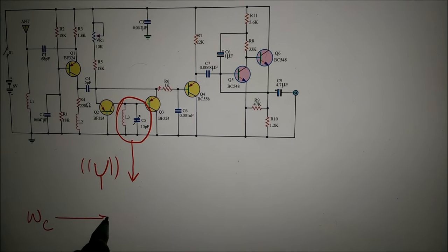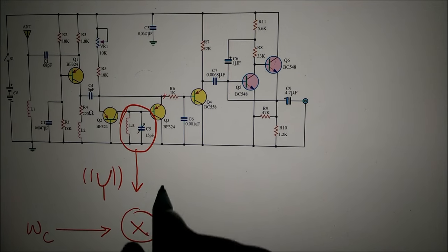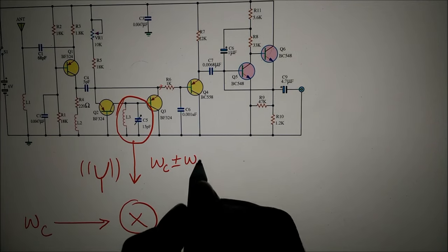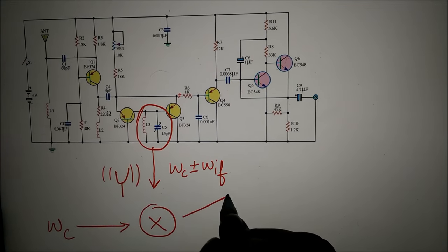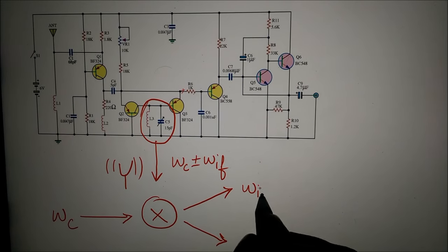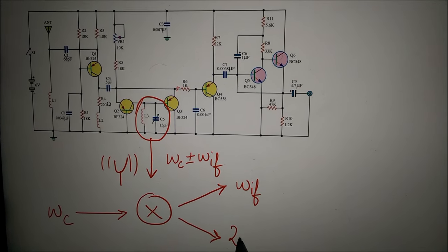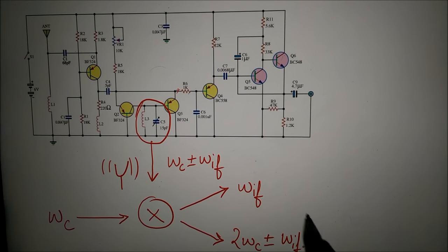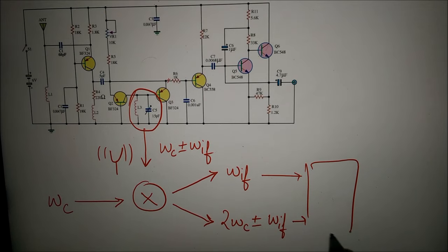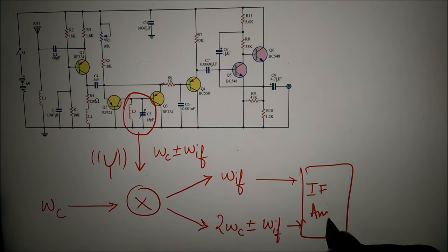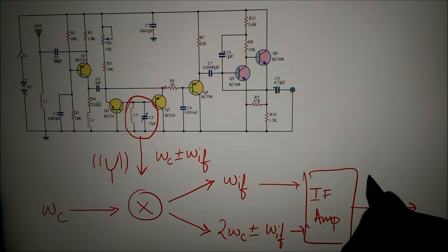Let the frequency of the input signal to the multiplier be Omega C. Then the input from the oscillator to the mixer will have a frequency of Omega C plus or minus Omega IF. The multiplier multiplies the two signals so that we get two signals: one with the frequency Omega IF and another with the frequency 2 Omega C plus or minus Omega IF. The second signal is rejected by the IF amplifier, and only Omega IF is amplified and passed on.